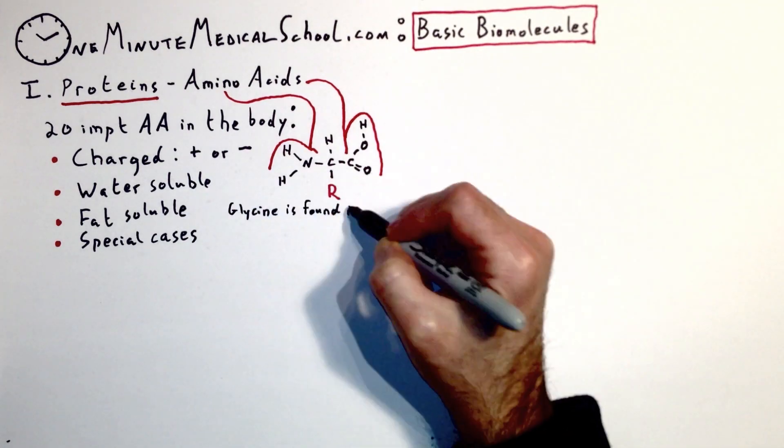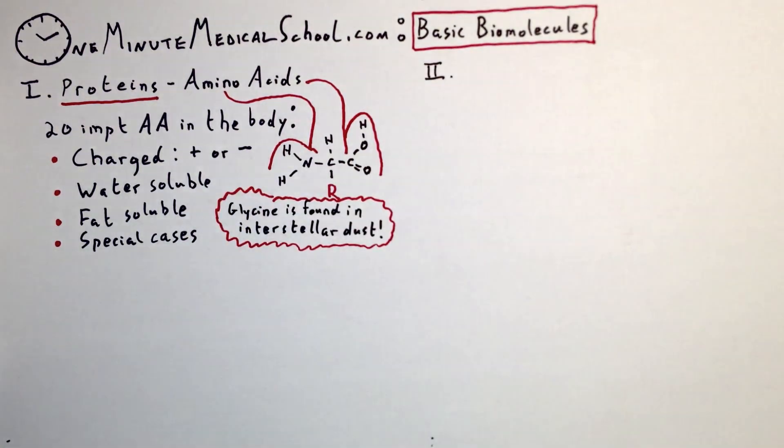This is their basic structure. This R-side group is what makes them distinct. Glycine is found in interstellar dust.